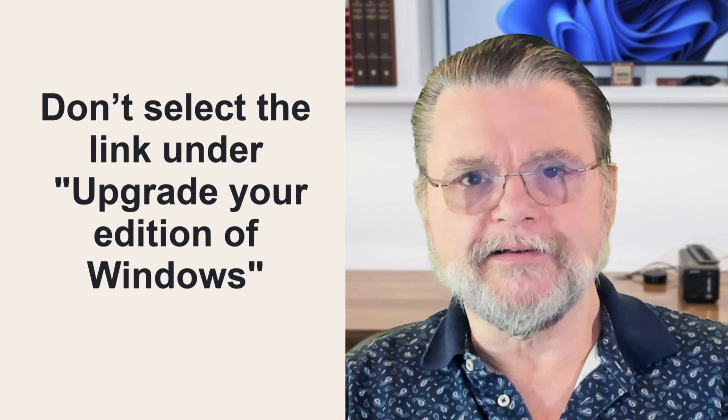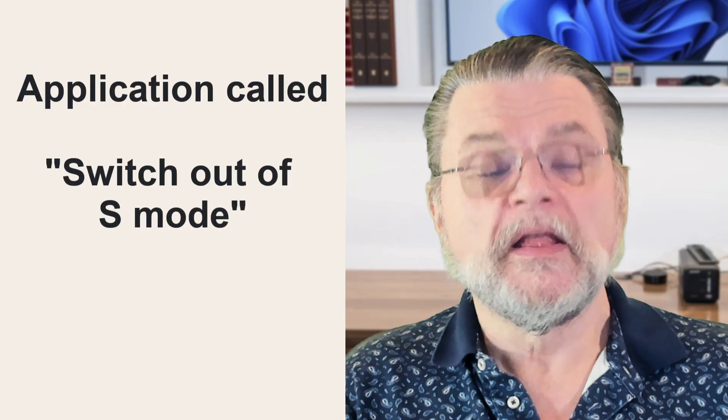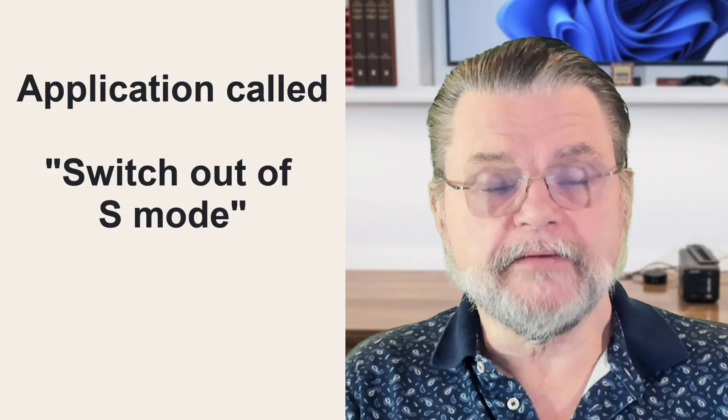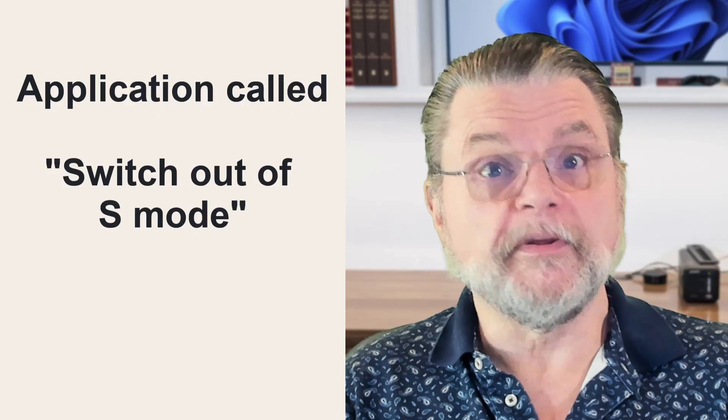Click on that — but we're not going to switch to Pro, do not do that. If you see a link that says Upgrade your edition of Windows, do not click that. But you should also see a link that says Go to the Store. This will take you to the Microsoft Store to an application called Switch Out of S-Mode. Install that application, run it, and S-Mode will be turned off.